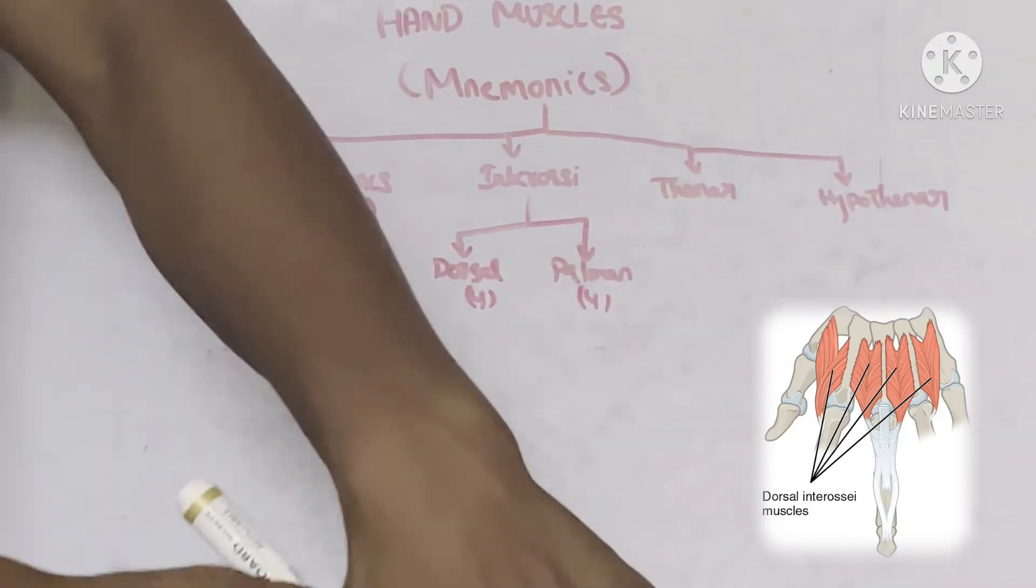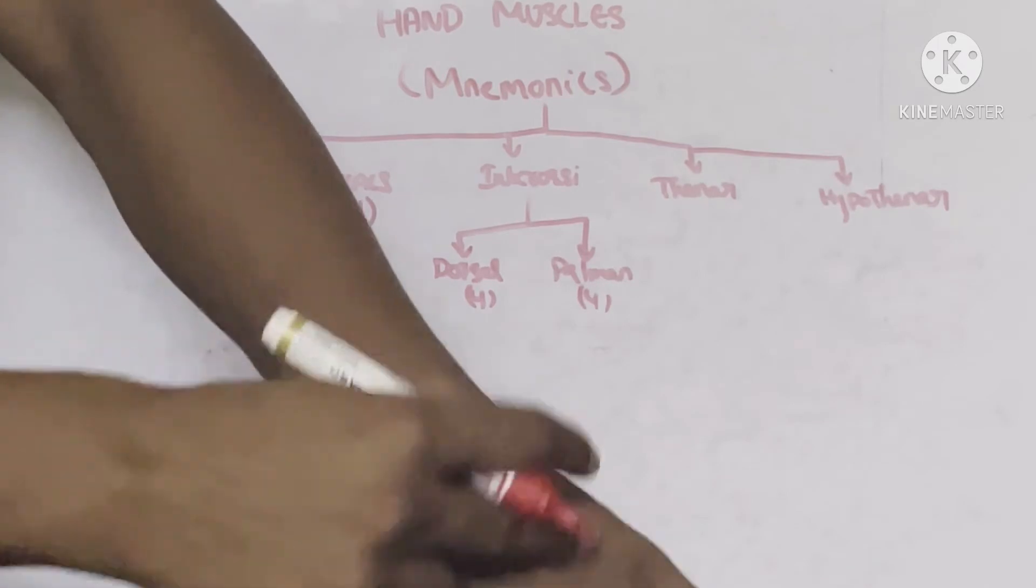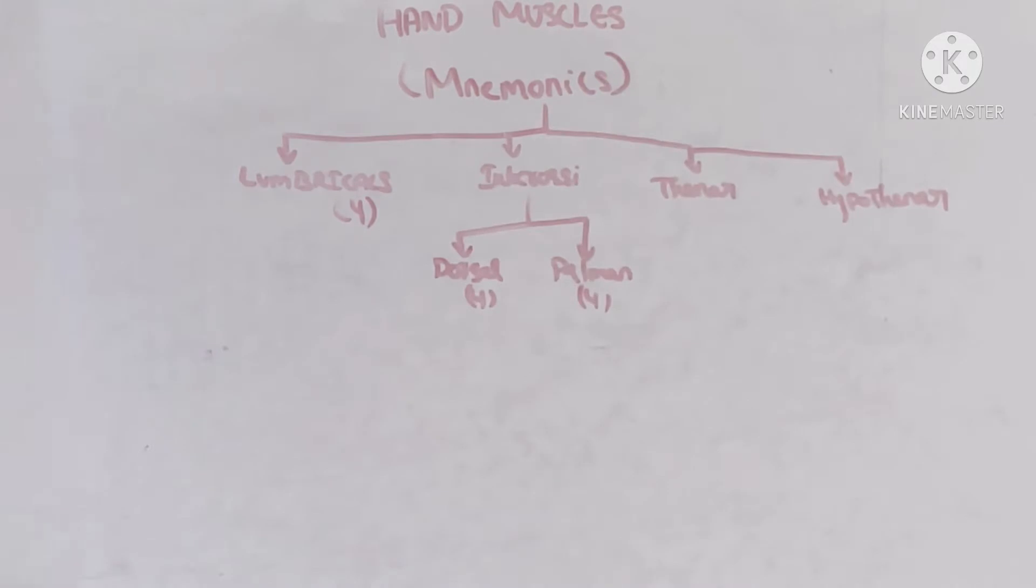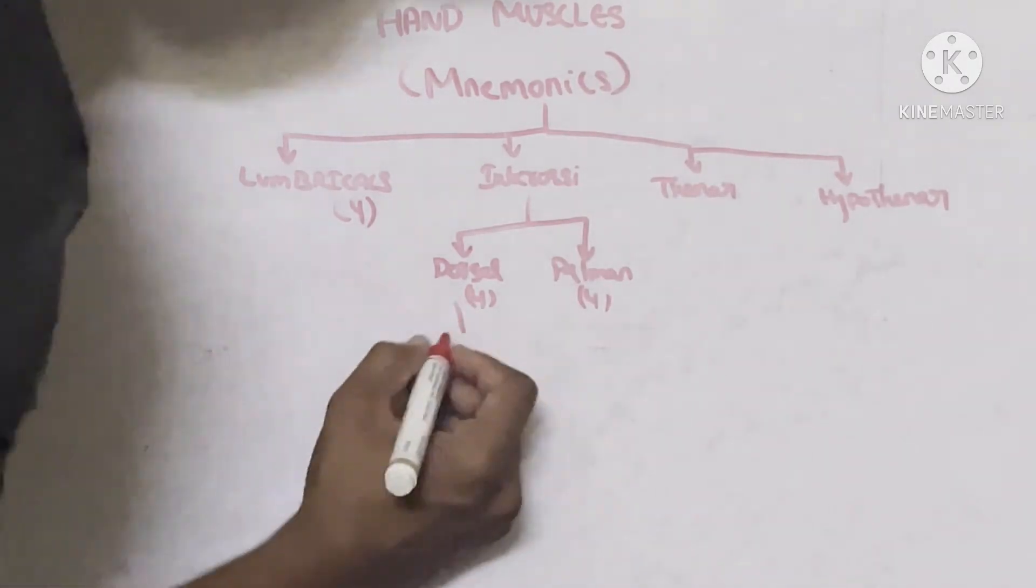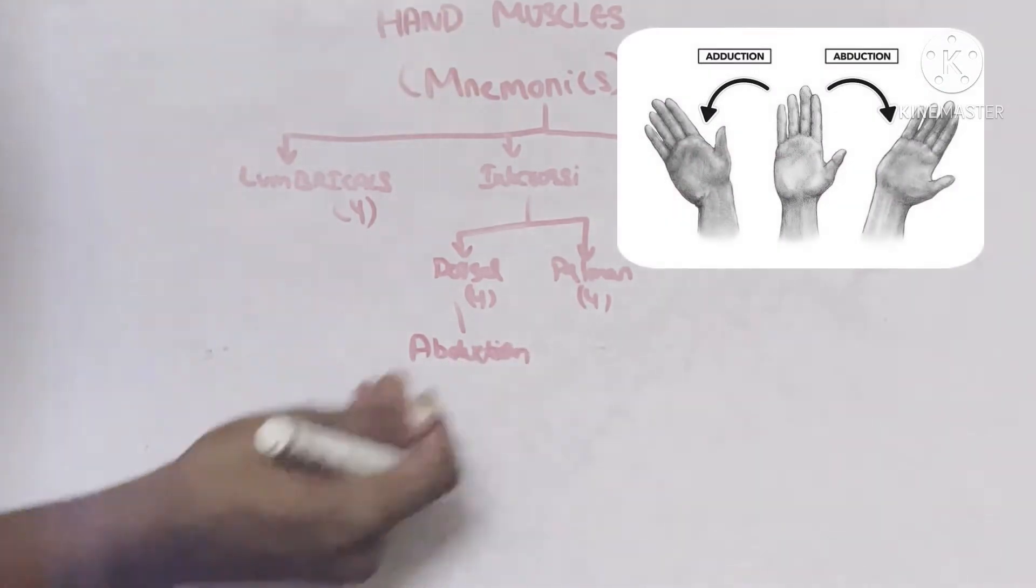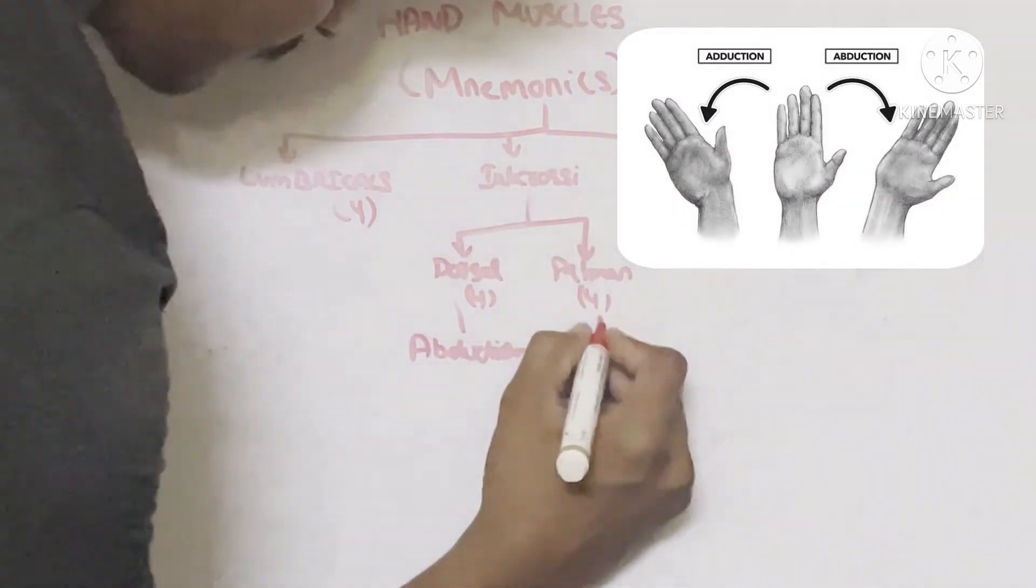These are the muscles present between the metacarpals called dorsal interossei, and these are the muscles present between the metacarpals are called palmar interossei. In addition, dorsal interossei helps in the process called abduction, and we will be displaying all this in this image, and adduction.